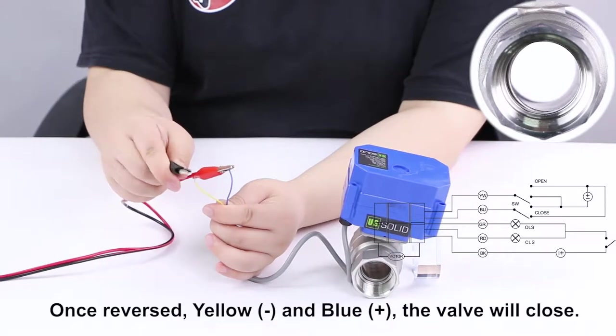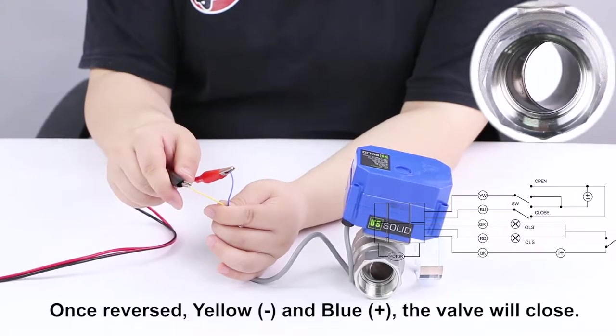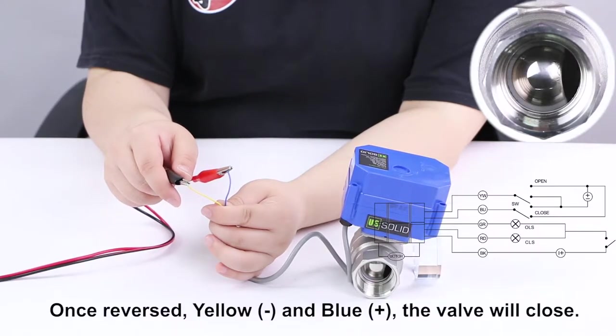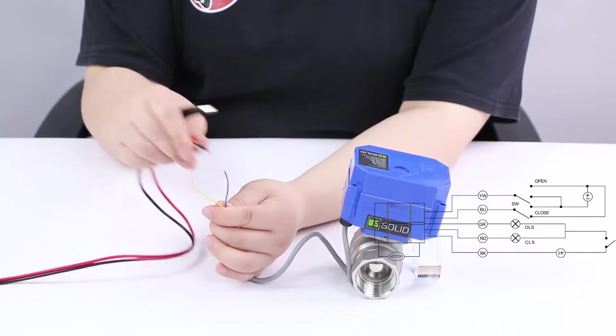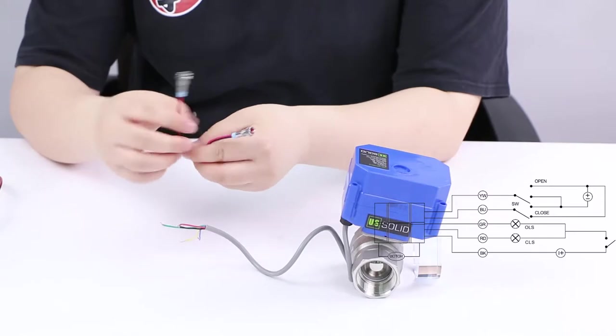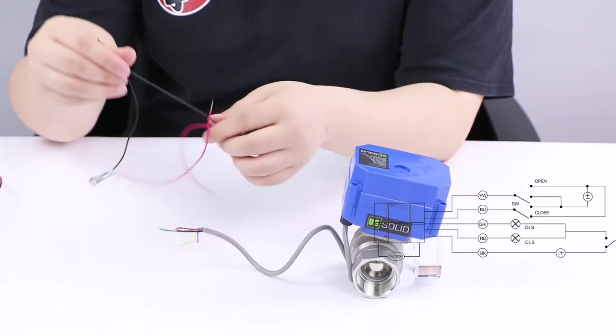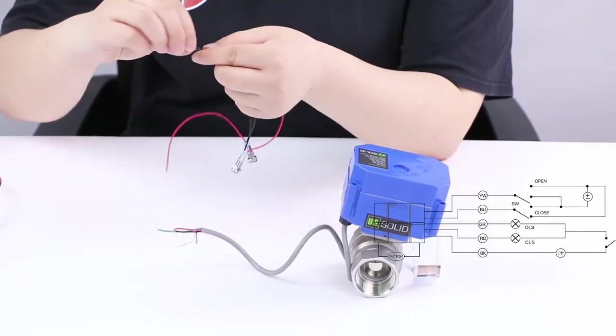Once reversed, yellow wire connected to negative pole and the blue wire connected to positive pole, the valve will close. The main difference between 2 wire reverse polarity and 5 wire setup motorized ball valves is